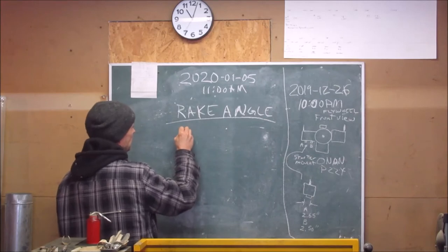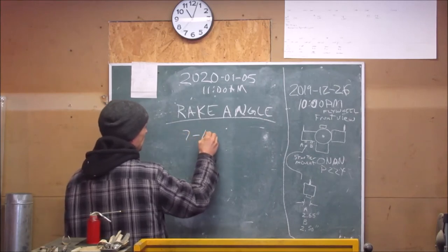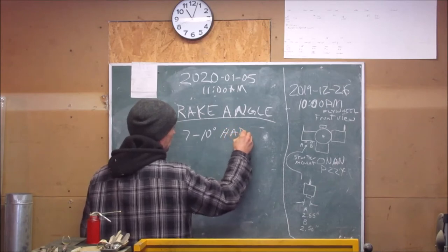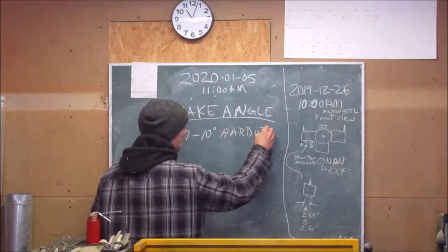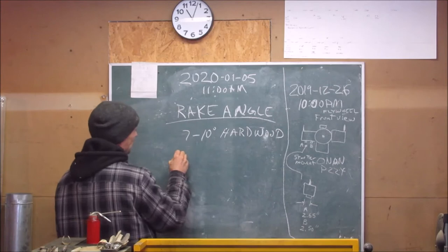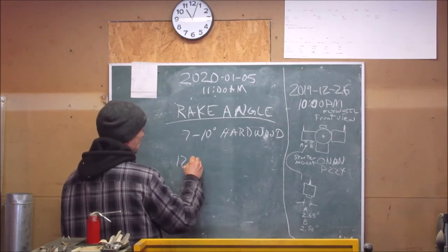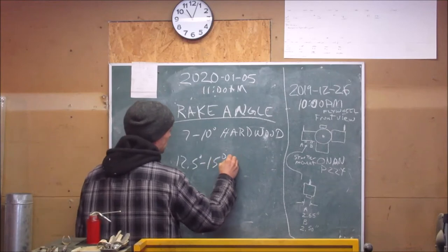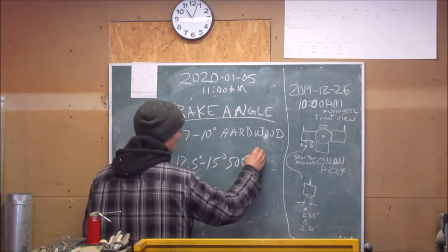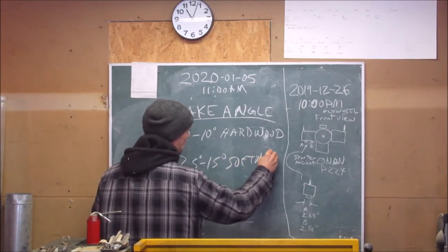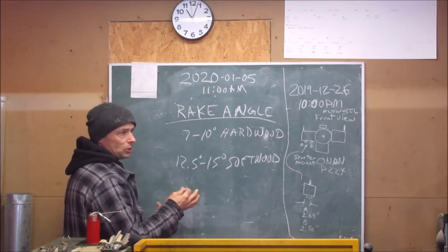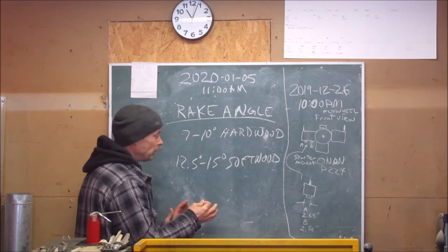Rake angle, seven to ten degrees hardwood, and twelve to fifteen for softwood. These are the recommendations on this particular sharpener.